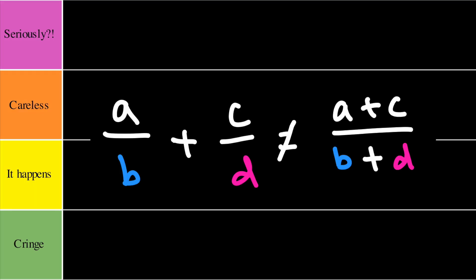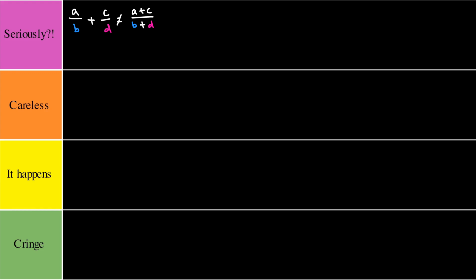Our first offender would have to be where if you add two different denominators, the sum of that would be the sum of the denominators. This is simply not the case. This is a problem I've seen often and I believe this would have to go into the seriously tier because it has a fundamental flaw of understanding about fractions. However, this could also go to careless tier because if you're rushing you might think of this real quick.